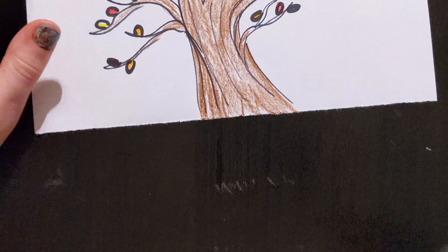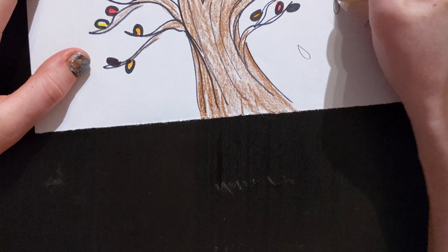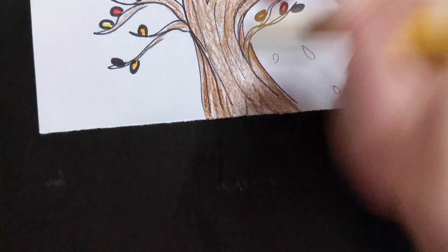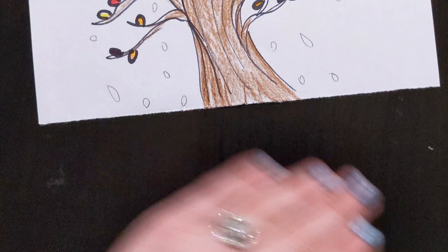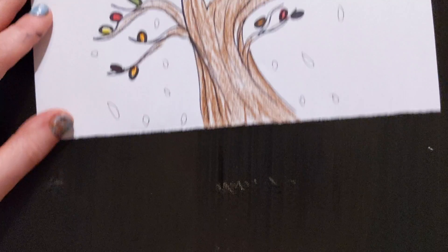And then the next thing you can do is you can have some of your leaves falling. They can be different sizes. And you can always have a pile of leaves too at the bottom.